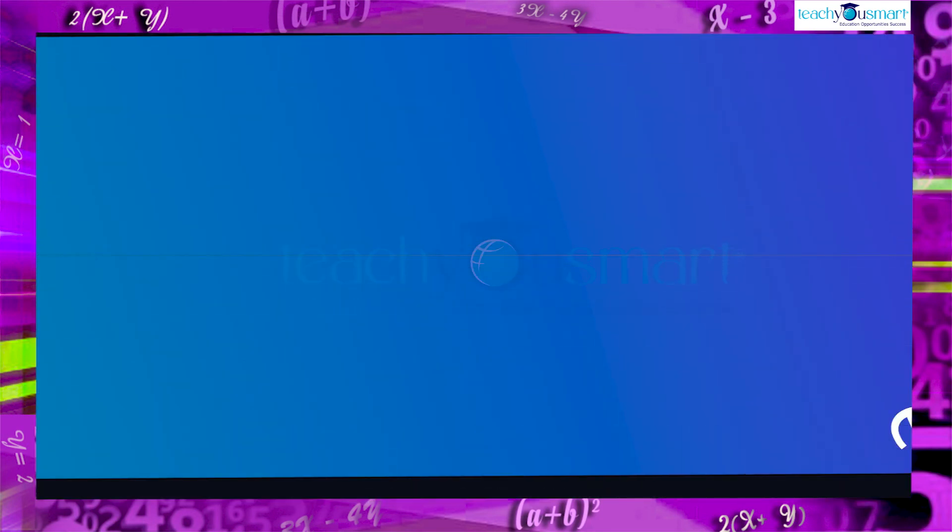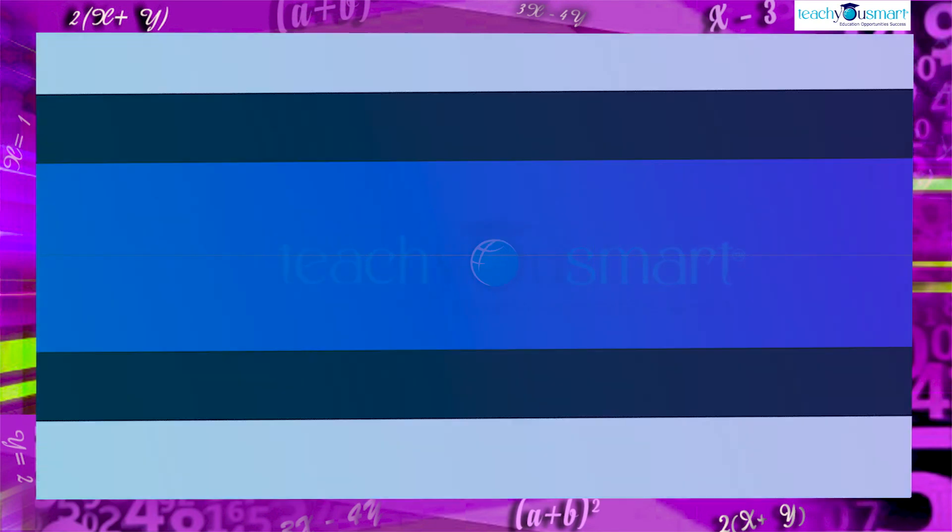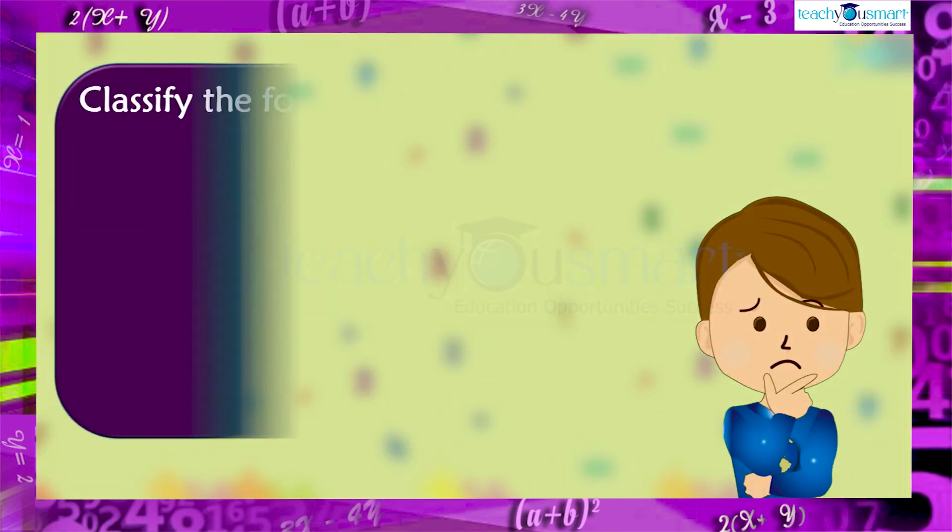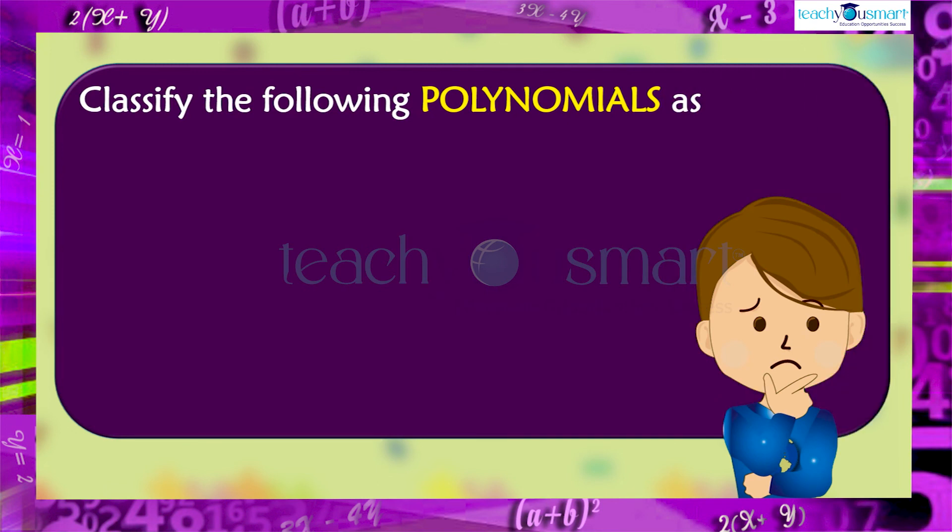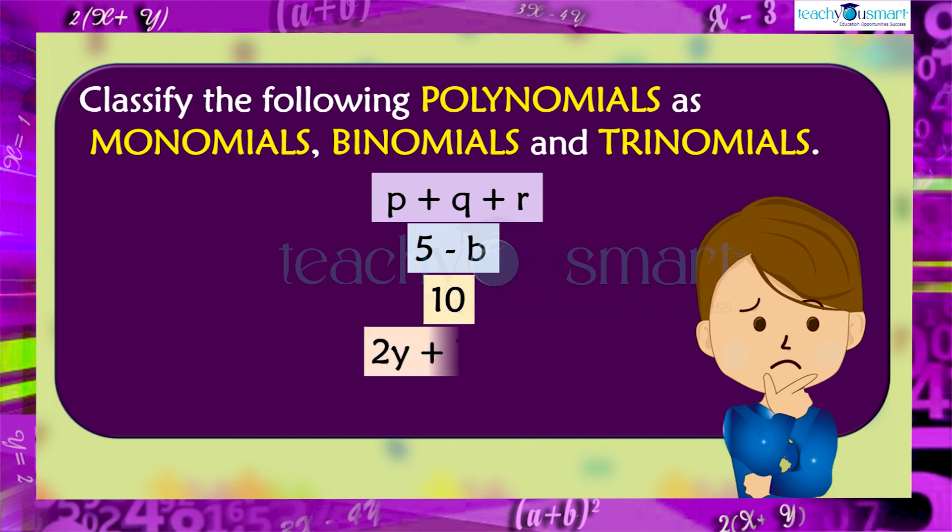Before winding up, let's check how much you understood by doing an activity. Classify the following polynomials as monomials, binomials and trinomials: p plus q plus r, 5 minus b, 10, 2y plus 7z plus 9, and ad minus ab.